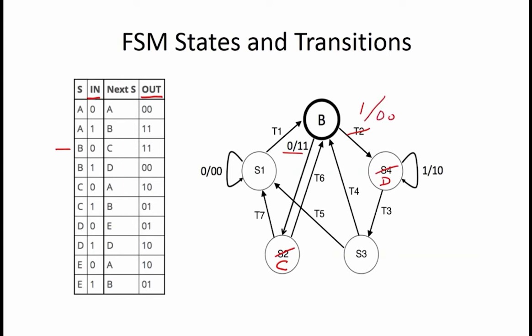From state D, we have the one input transition already labeled, so T3 corresponds to n equals 0. Looking at the truth table, that means that S3 equals E and T3 equals 0 slash 01.